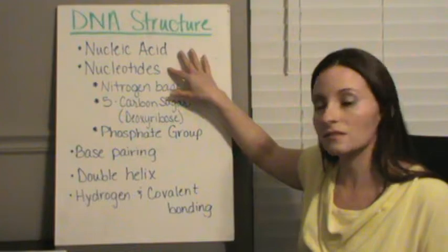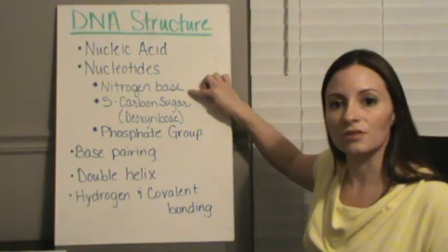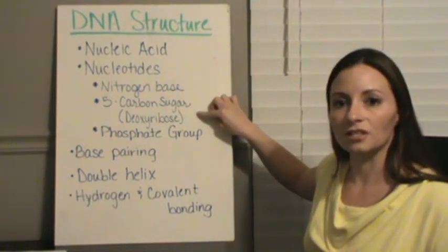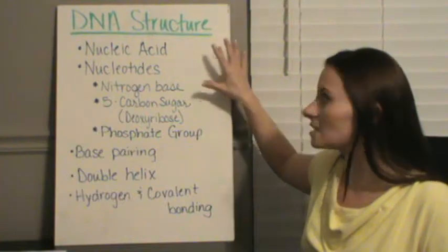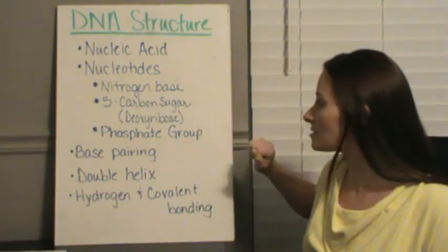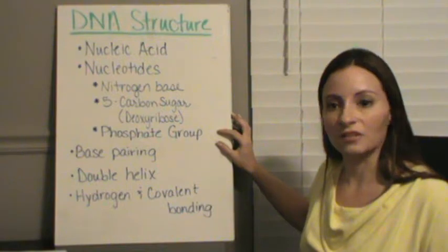Nucleic acids are all made up of nucleotides. Nucleotides have three parts: a nitrogen base, a 5-carbon sugar, and in DNA that 5-carbon sugar is deoxyribose, and a phosphate group.